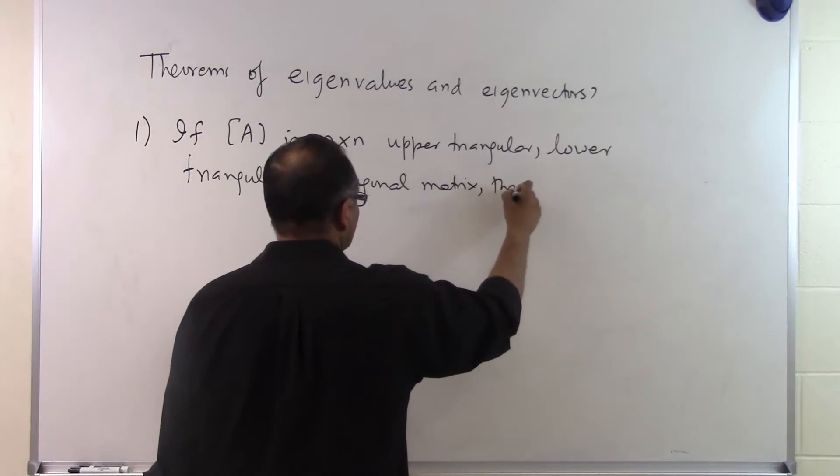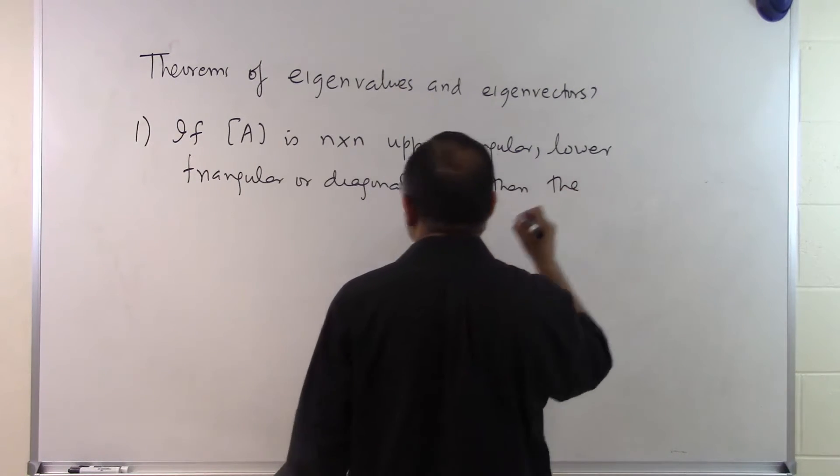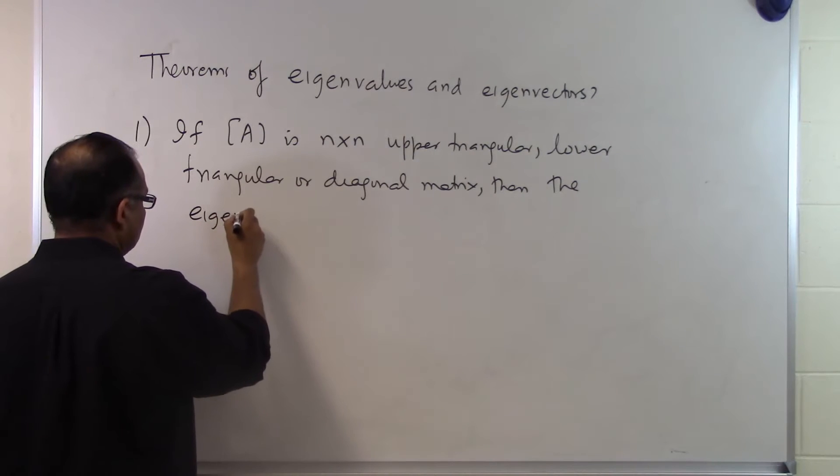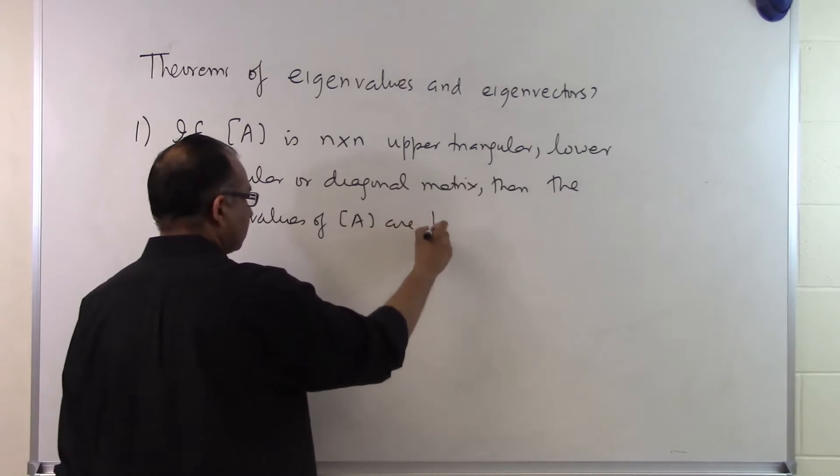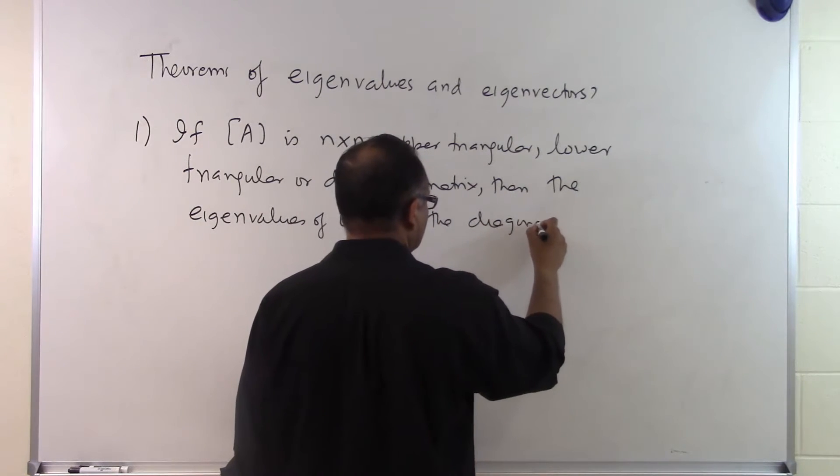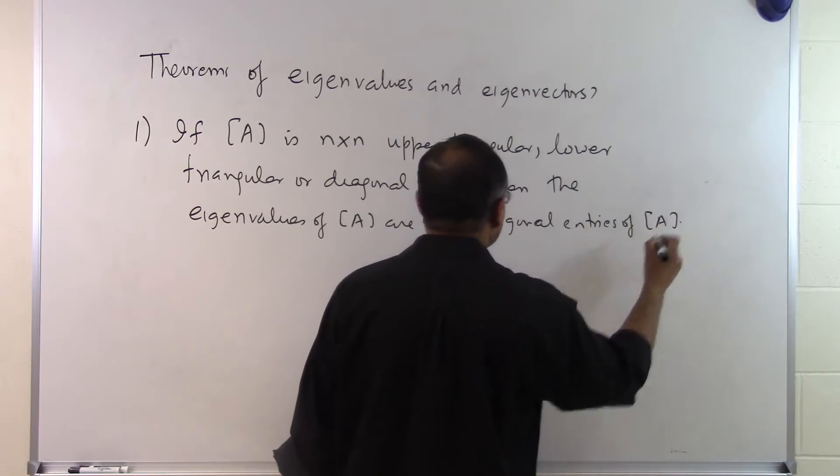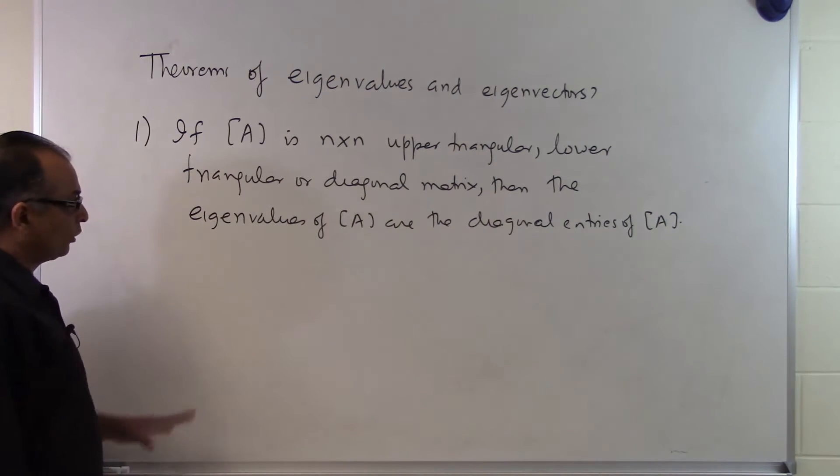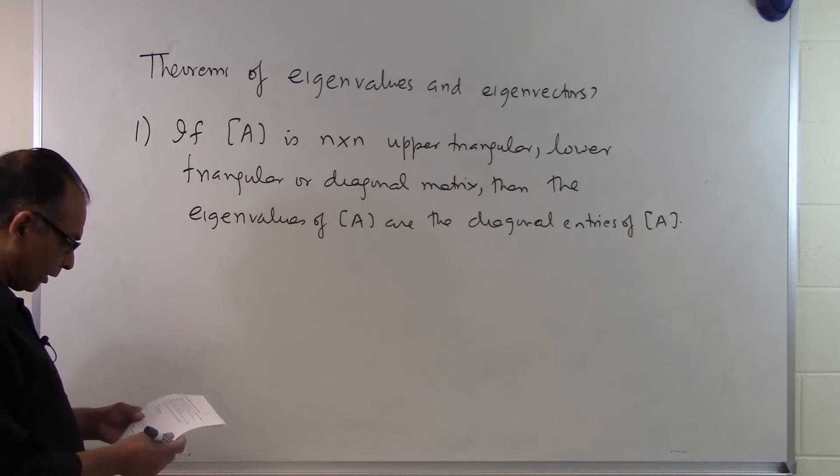then the eigenvalues of A are the diagonal entries of A. So if you have an upper triangular matrix or a lower triangular matrix or a diagonal matrix, you don't have to go through the process of finding the determinant, because the eigenvalues of A themselves are the diagonal entries of the A matrix.